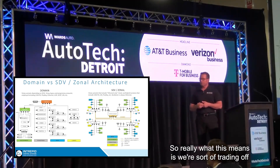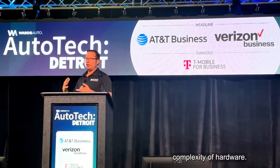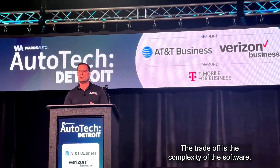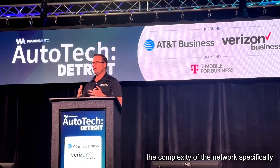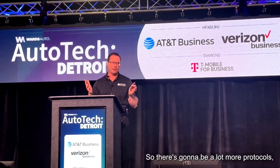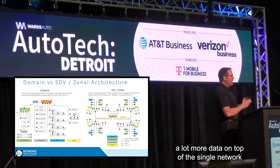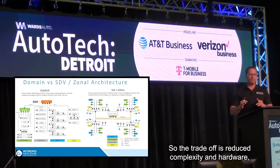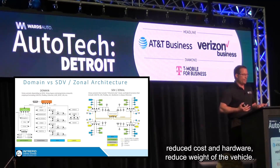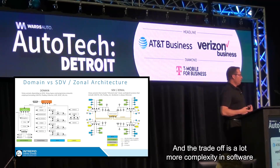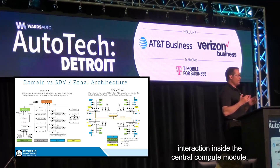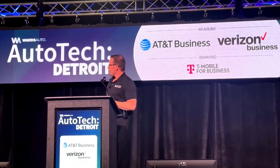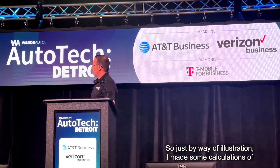We're trading off complexity of hardware — reducing the number of ECUs and the complexity of the wiring harness — but the trade-off is that the complexity of the software and the complexity of the network is going to be increased by orders of magnitude. There's going to be a lot more protocols and a lot more data on top of the single network. The trade-off is reduced hardware complexity and cost and reduced vehicle weight, but a lot more complexity in software and networking.